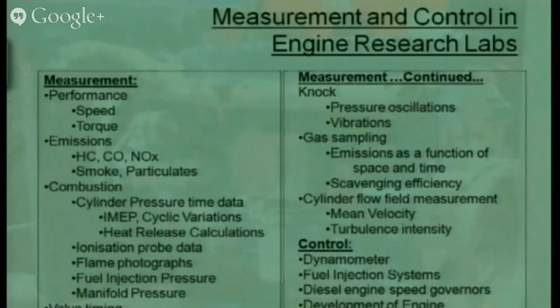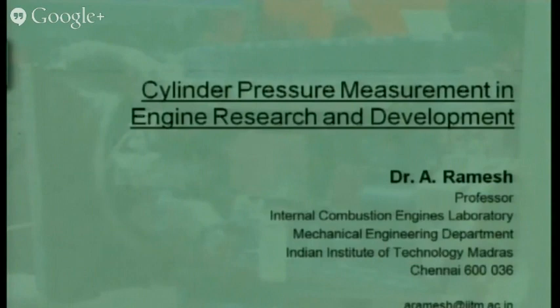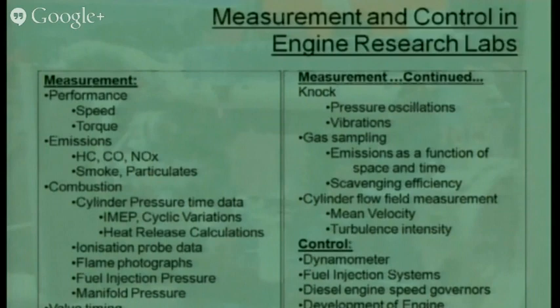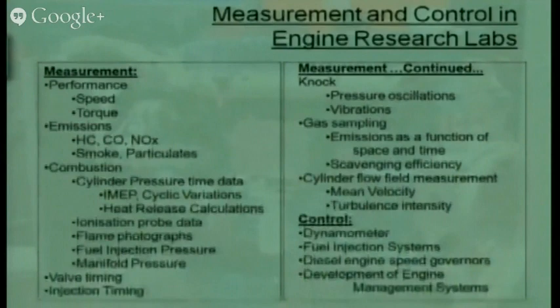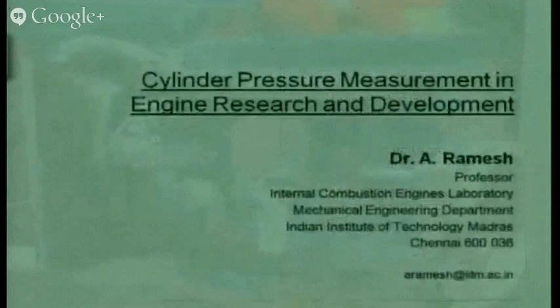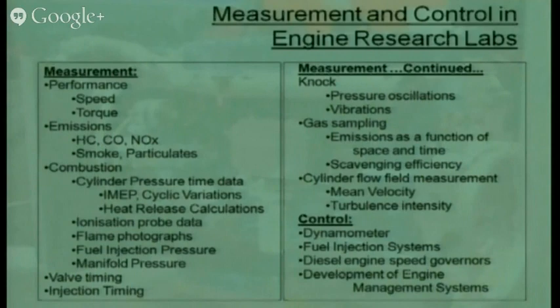In laboratories, we do measurements for looking at the performance of the engine, like speed and torque, then emissions like HC, CO, NOx, smoke, and particulates. At an advanced level, we look at combustion through cylinder pressure time data. Cylinder pressure can give us information on IMEP, cyclic variations, heat release rates, and combustion behavior. We also look at combustion through ionization probe data, flame photographs, fuel injection pressures, and manifold pressure.